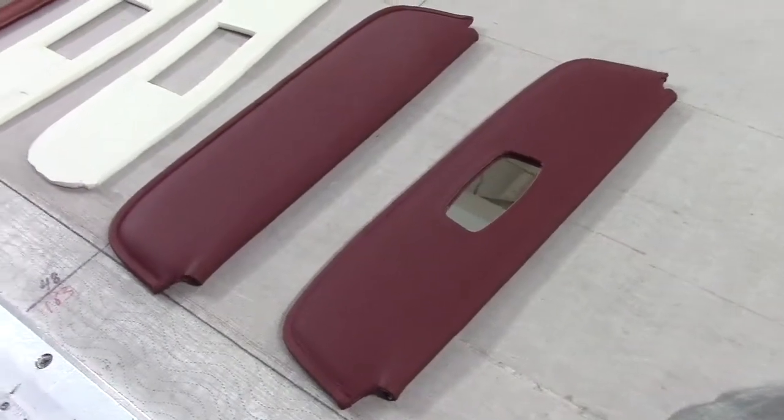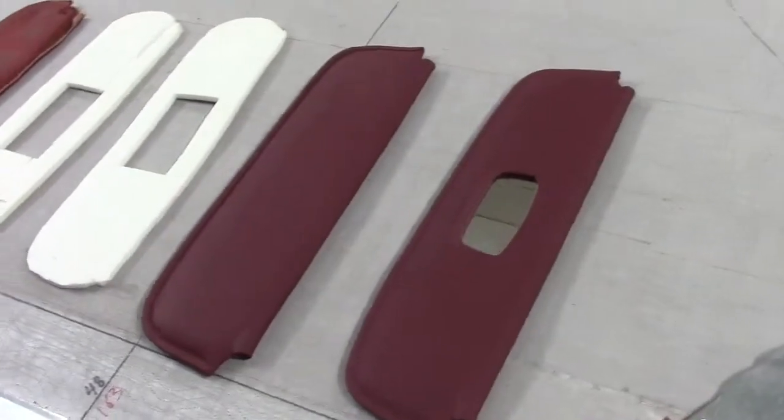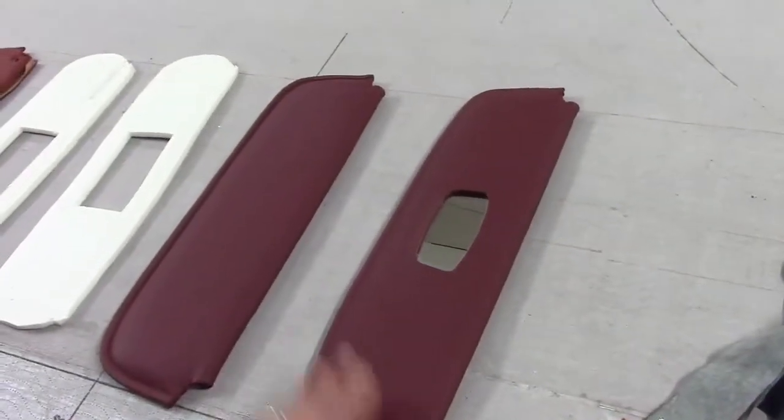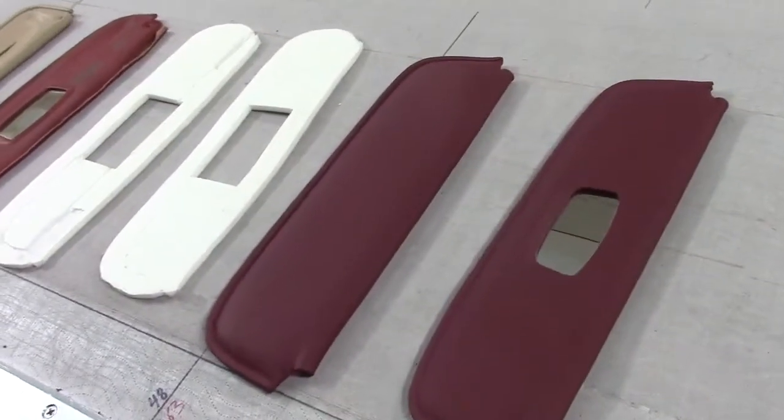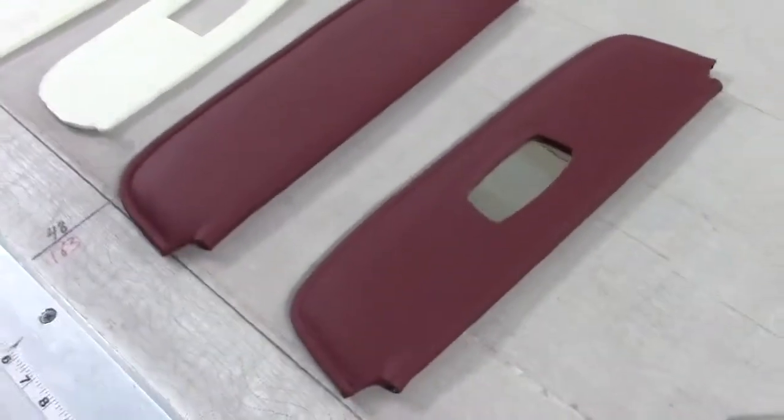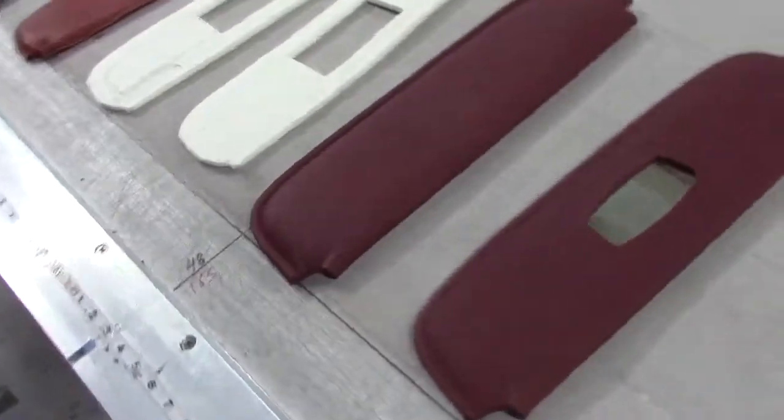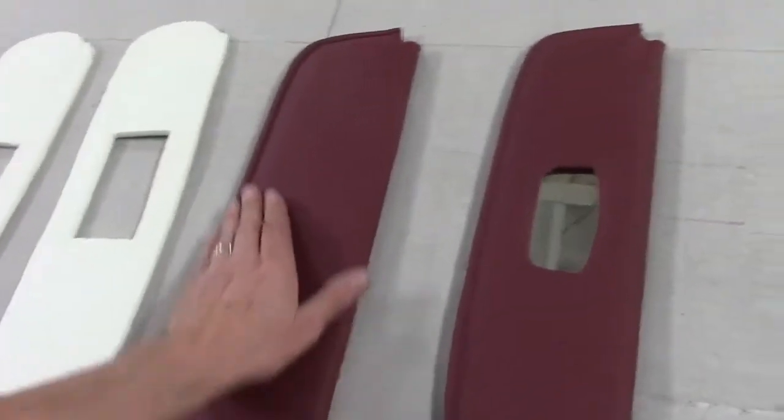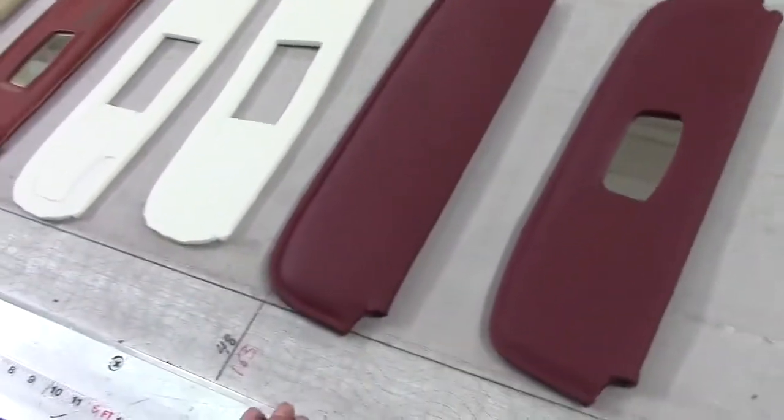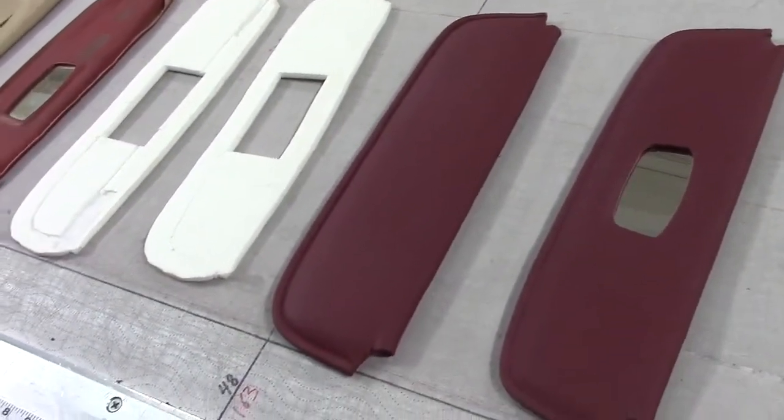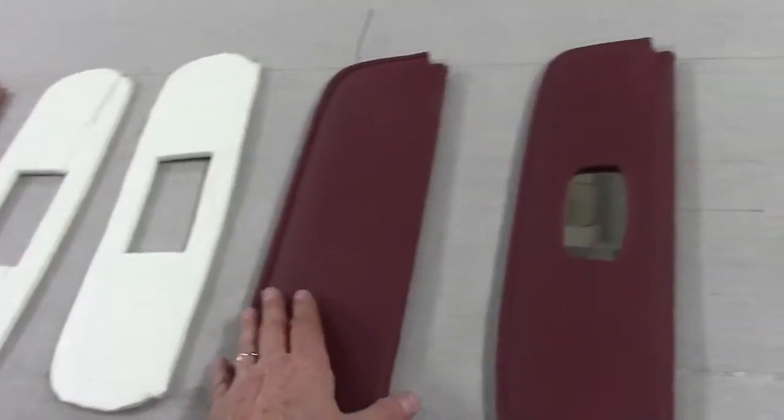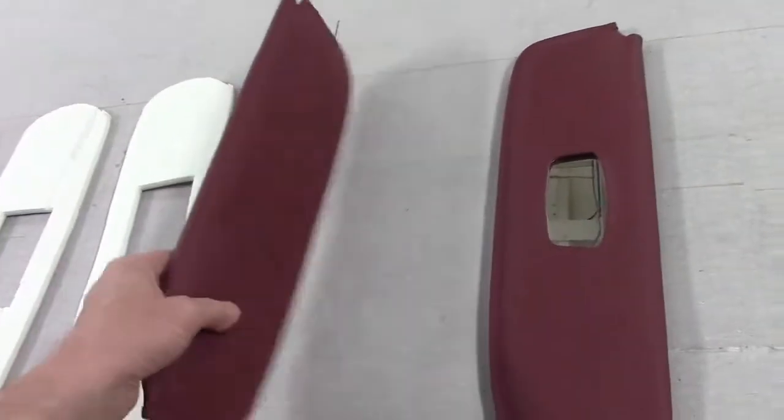190 SL sun visor offering from Heritage Upholstery. Very proud of the results that we get with the sun visors for the 190s. We see them at the shows and it's always a telltale sign to us on the quality of the interior restoration. And frankly most cars fail that test.